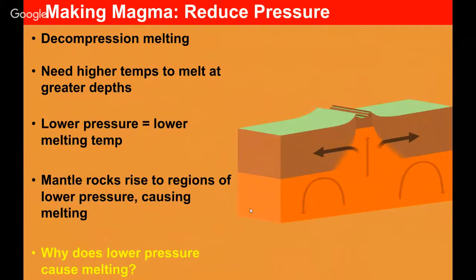With decompression melting, which is reducing pressure, you basically need higher temps to melt at greater depths, and if you decrease the pressure, you're lowering the melting temperature there. What will happen is those mantle rocks will rise to the regions of lower pressure and help create that melting area. This is specific to these divergent boundaries where we're generating new magma.